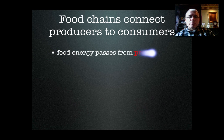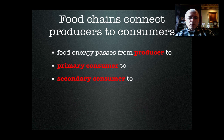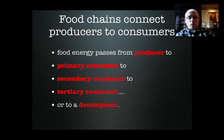Food chains connect producers to consumers. The energy flows from the sun to producers, who change that sunlight energy into chemical energy. Then a primary consumer or herbivore will eat the plant, then a secondary consumer will eat the herbivore, then maybe a tertiary consumer will eat the secondary consumer, and so on, until finally everything eventually dies and gets decomposed. Whatever energy is left over gets passed to decomposers.